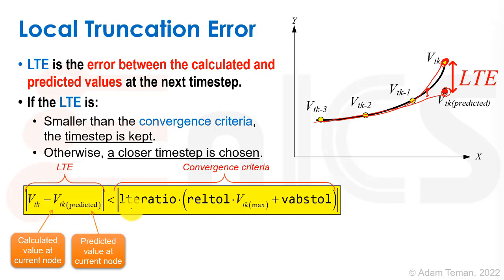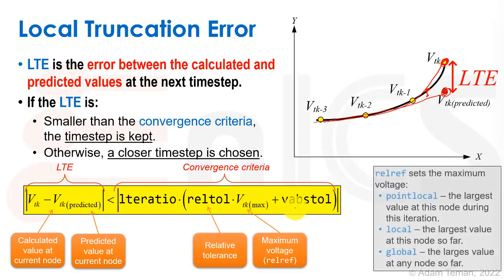The local truncation error is Vtk minus Vtk predicted. This is the calculated value at the current node and the predicted value. That should be smaller than what we call the LTE ratio times our convergence criteria for DC op: RELTOL times the maximum voltage on the whole circuit plus the absolute value. RELTOL is the relative tolerance, and Vtk max is the maximum voltage, also known as the RELREF parameter. It can be point local, the largest value at this node during this iteration, local, the largest value at this node so far, or global, the largest value at any node so far.